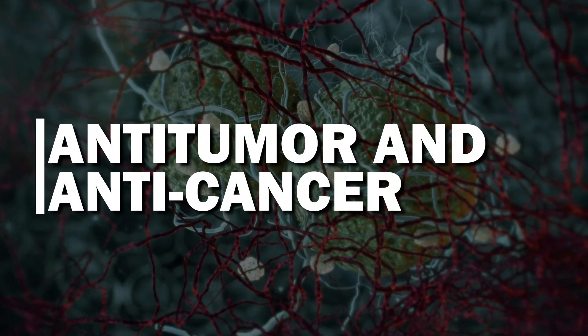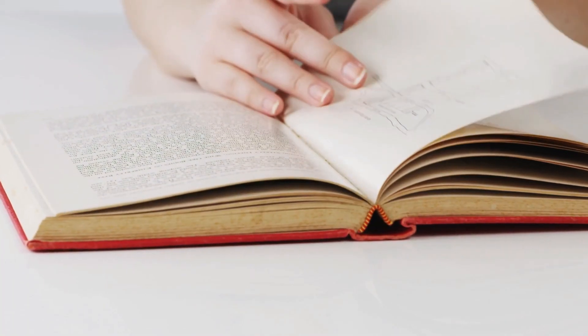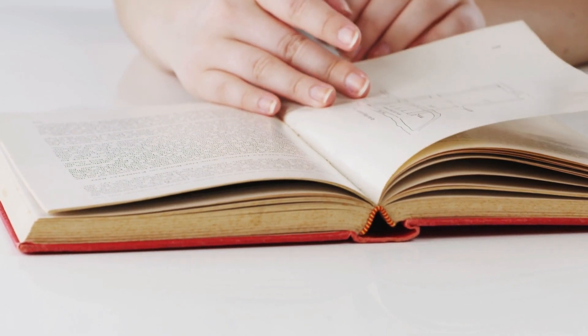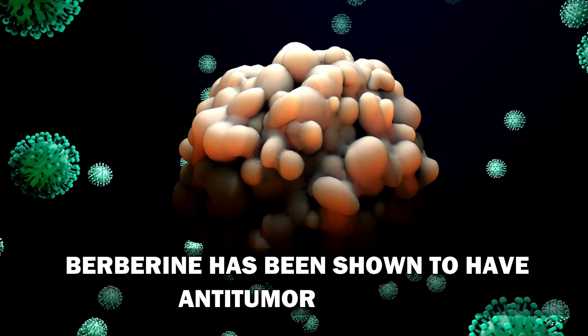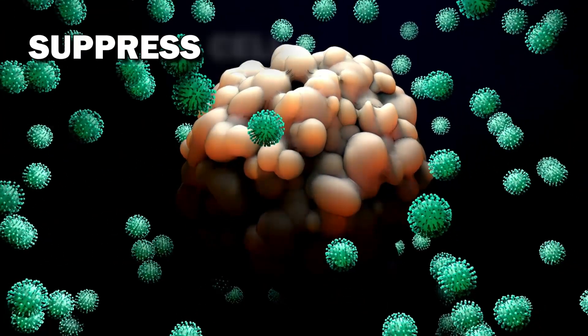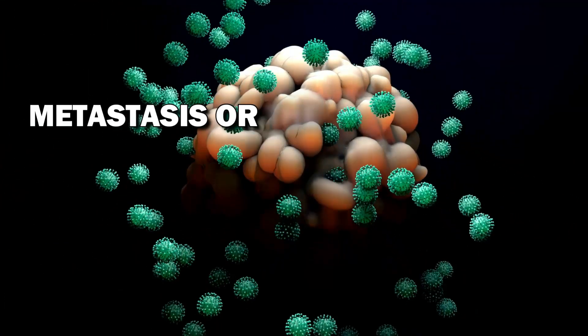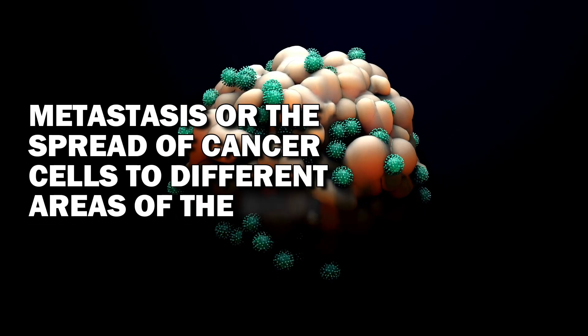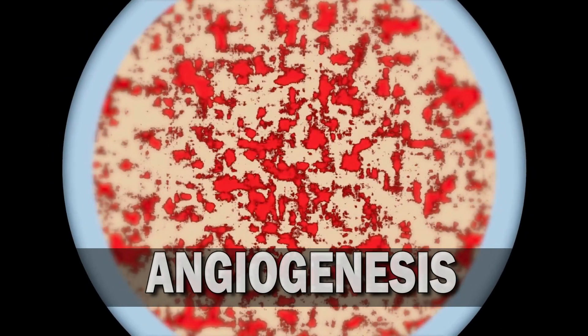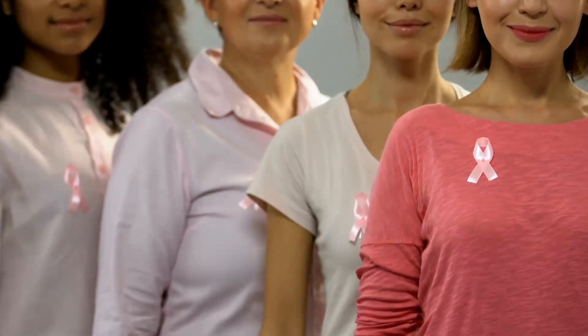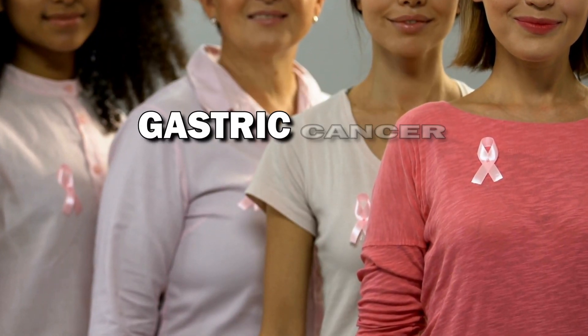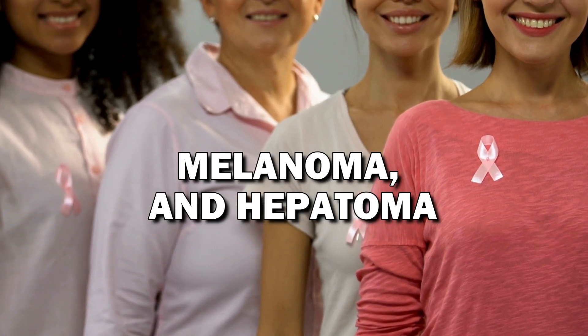Number five, anti-tumor and anti-cancer. There are lots of studies conducted on the use of berberine for brain tumors and cancer. Berberine has been shown to have anti-tumor effects. It has also been observed to suppress cell proliferation, metastasis, or the spread of cancer cells to different areas of the body, and angiogenesis, or the formation of new blood vessels in certain types of cancer including breast cancer, gastric cancer, melanoma, and hepatoma.